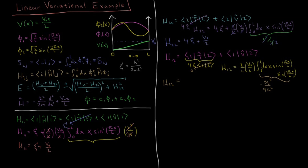The integral of x times sine(pi x/L) times sine(2 pi x/L) from 0 to L evaluates to minus 8L squared over 9 pi squared — obtained from Wolfram Alpha or an integral table. After substitution, the L squared cancels with the two L's in the denominator, and 2 times 8 gives 16. So H12 equals minus 16 V0 over 9 pi squared. That is our coupling matrix element.